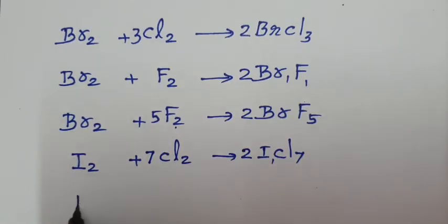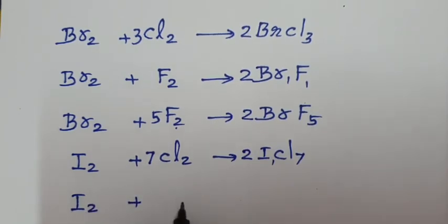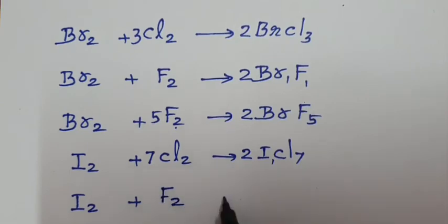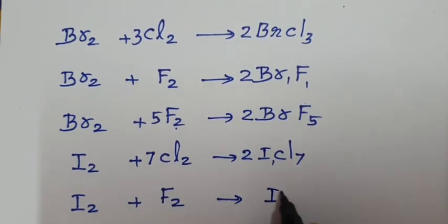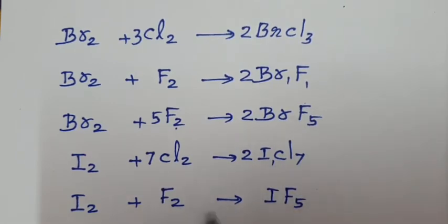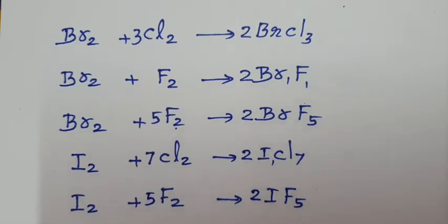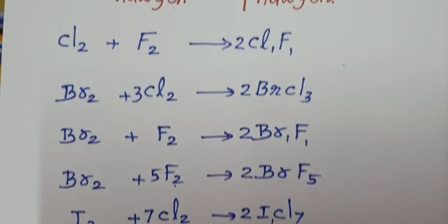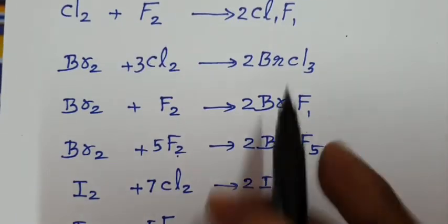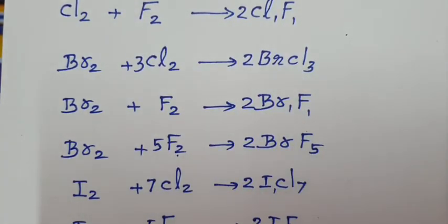Or if the first halogen is iodine and the second halogen is fluorine (high electronegative), you can write IF5 as an interhalogen compound. So when writing interhalogen compounds, the low electronegative halogen should be written first, followed by the high electronegative halogen.